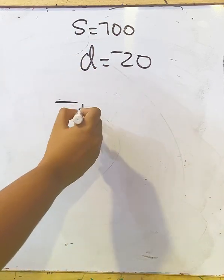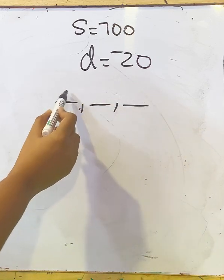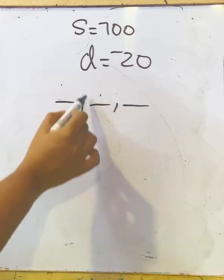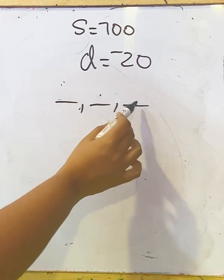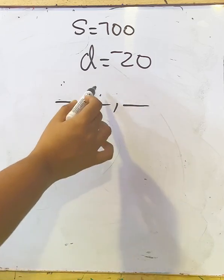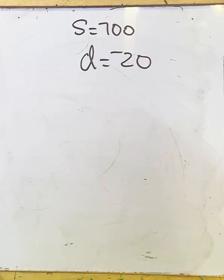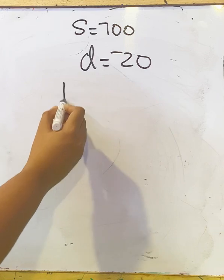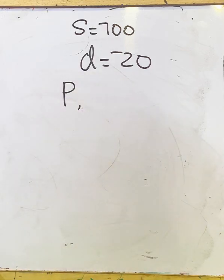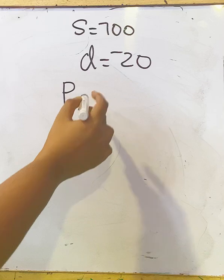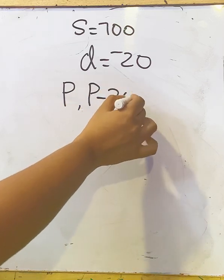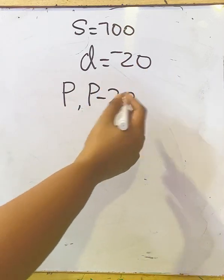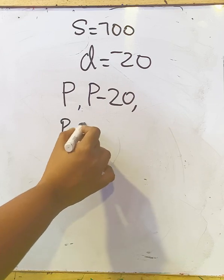If these are the terms, here 20 is less than this preceding amount, and again 20 is less than this preceding amount. We have to find the value of the prizes. Let the first prize be P. The prize amount is P, then the next term will be P minus 20.